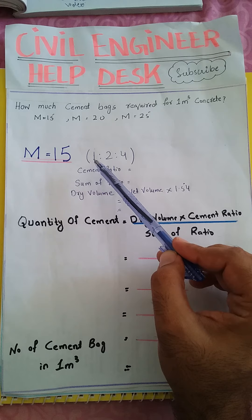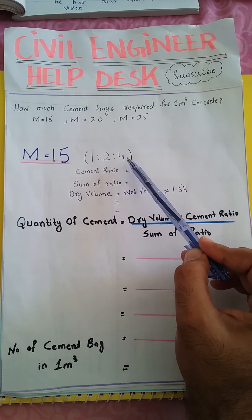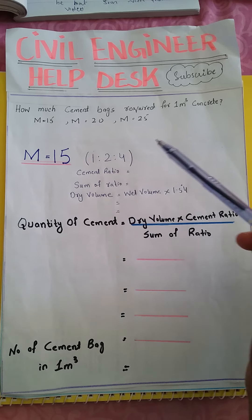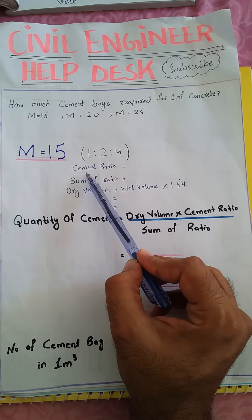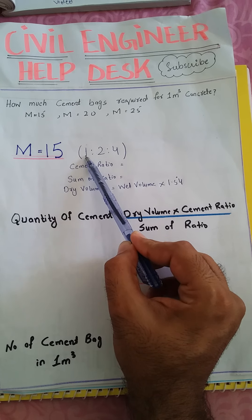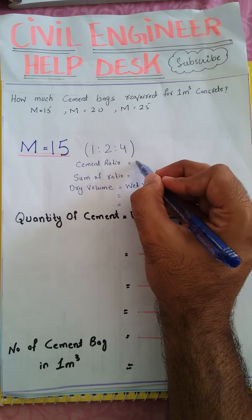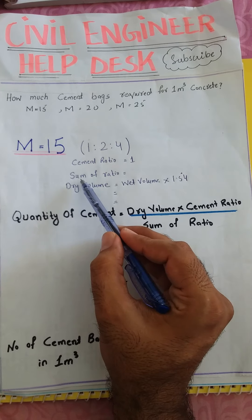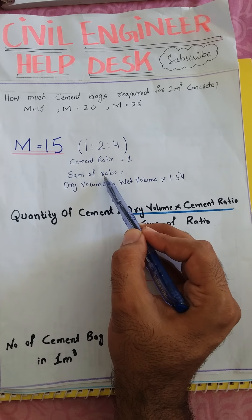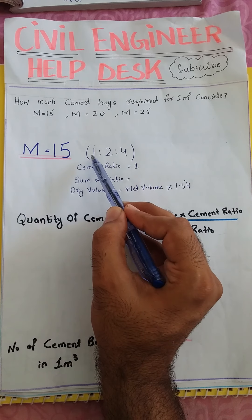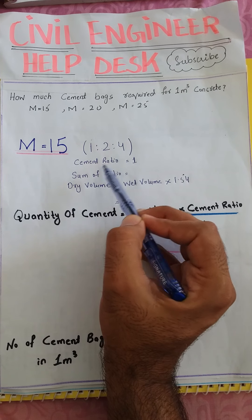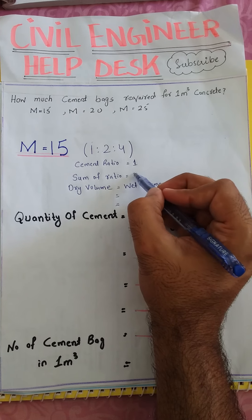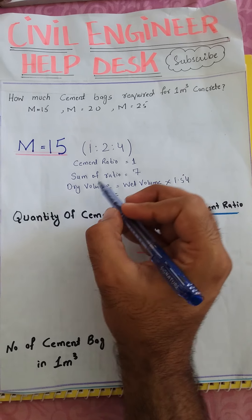First we will do the calculation for grade M15. Grade M15 means a ratio of 1:2:4. From this we get the cement ratio, which is equal to 1. The sum of ratio is obtained by adding all three parts: 1 plus 2 plus 4, which equals 7.